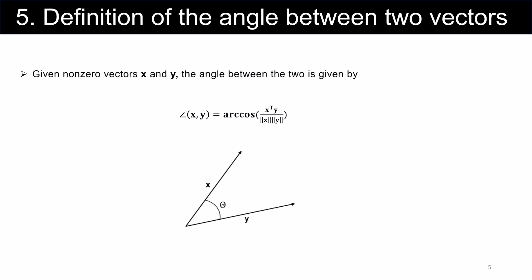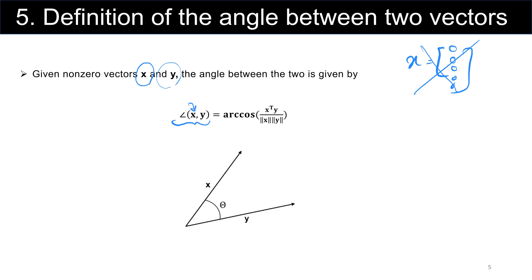Given two non-zero vectors x and y — a non-zero vector means a vector where at least one of its elements is non-zero, so a vector like (0, 0, 0) does not apply — the angle between the two vectors is shown by the symbol: angle between x and y equals arccos of (x transpose y) divided by the Euclidean norm of x multiplied by the Euclidean norm of y.